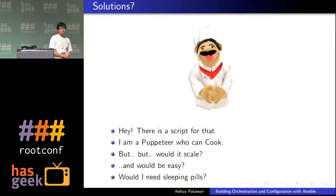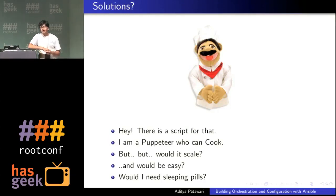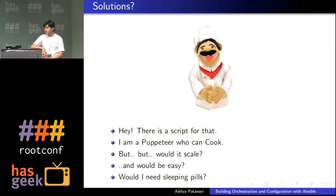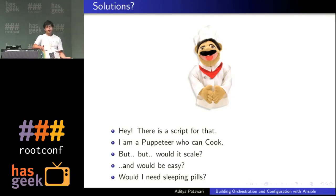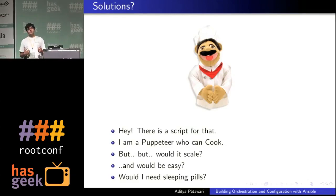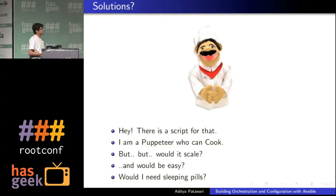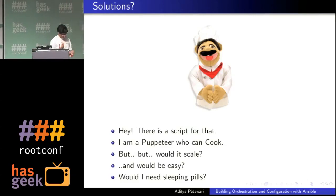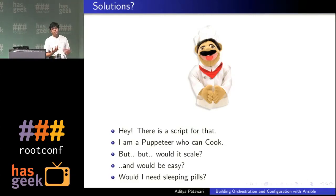When we think about solutions, the most natural thing as a DevOps person is to write a script — maybe 10 lines and be done forever. Well, that never works out. Those 10 lines keep growing and growing. Eventually you realize that was a mistake and you should have used Puppet or Chef or something like that.